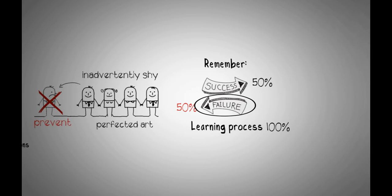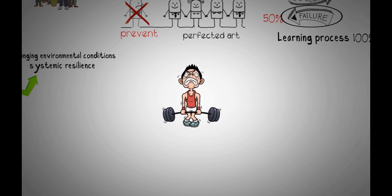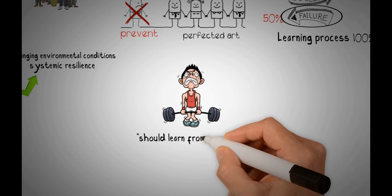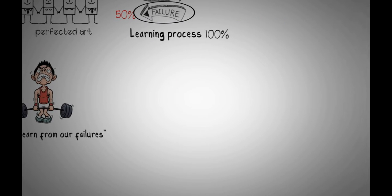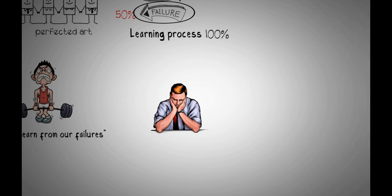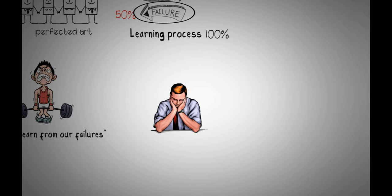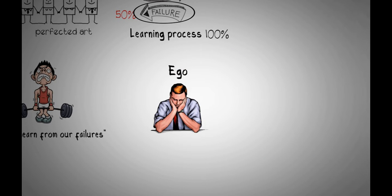Failure is instructive because it points us to areas of weakness and regions that we can improve on. Of course, it is easy to say that we should learn from our failures, but in actual fact, circumstances may make learning from our failures a rather challenging task for some of us. This becomes especially so when our emotions come into play and we can't get over ourselves. Our egos become hurt in the process, leading to a downward spiral into self-pity and destruction.